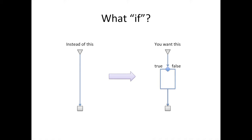What you might really want to do is, instead of going down a straight line, you might want to reach a point in the program — a statement — where you have to make a decision. Should I go to the left or should I go to the right? We call this branching, because you can think of this as a fork in the road of your program, and you can take one side or the other.